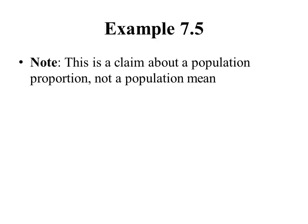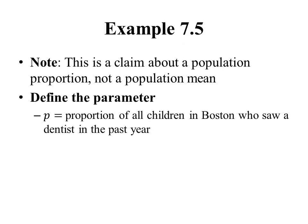The test we're doing here is a little bit different than Part A — same basic steps and idea, but the calculations are a little different. The first step in any hypothesis test is to define the parameter. Here we're making a claim about a population proportion, so we use the parameter P rather than mu. P is the proportion of all children in Boston who saw a dentist in the past year. We always use the word 'all' to make clear we're making a claim about a large population, not just the few in a sample.